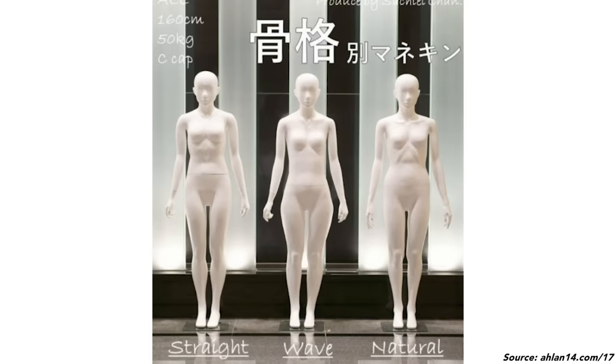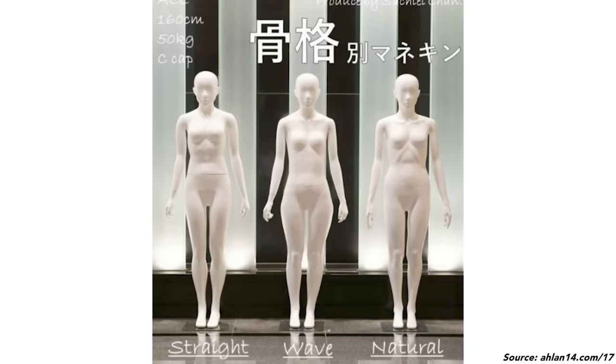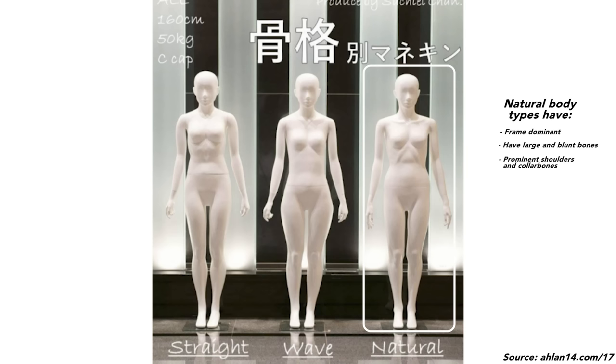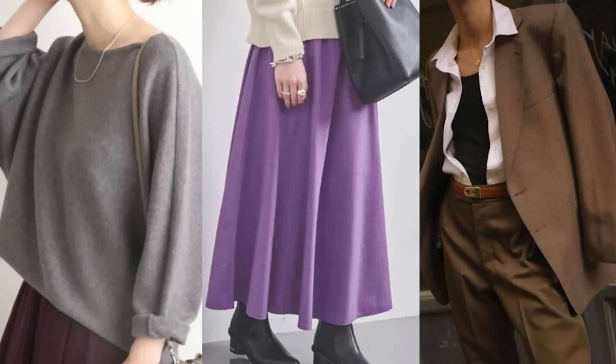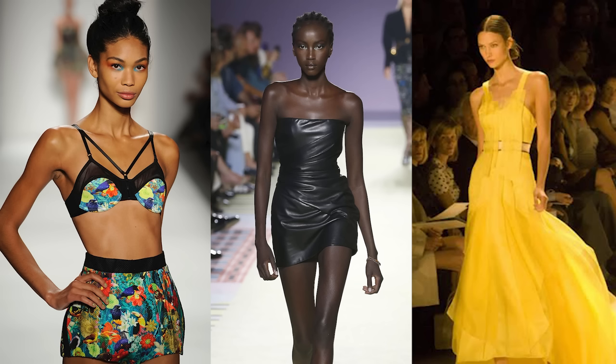The third type is the natural type, and I think this one is actually quite similar to the Kibbe naturals. I typed myself as a flamboyant natural in my Kibbe video, and a lot of you agreed that I am some type of natural, although some also thought I might be a dramatic classic. Natural types are the most frame-dominant type out of the three. Bluntness in the bones is the most obvious — shoulders are quite prominent, and so are the collarbones, but unlike wave types, the collarbones have a very firm and sturdy feel. They usually have straightness in the waist area and are quite muscle and bone dominant, so their skin has a thick and leathery feel.